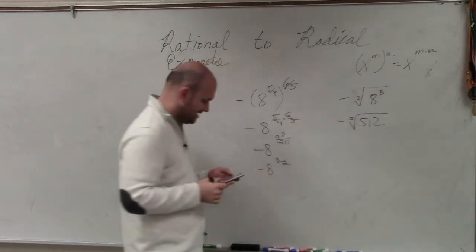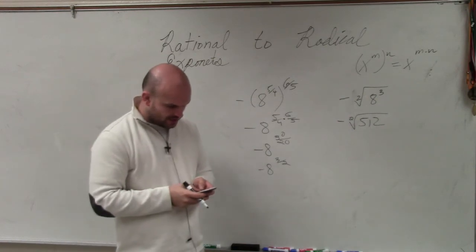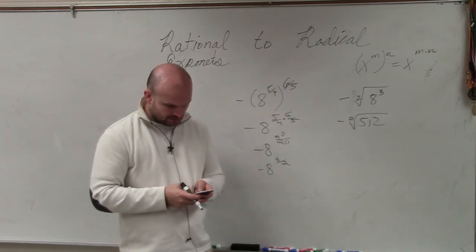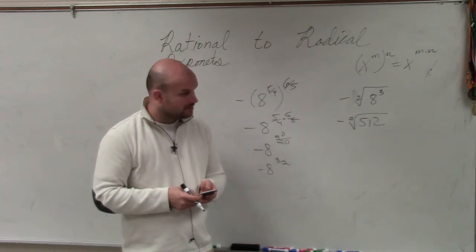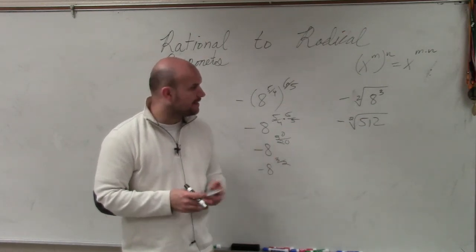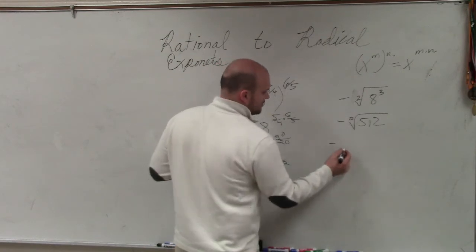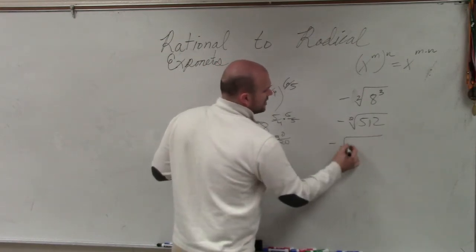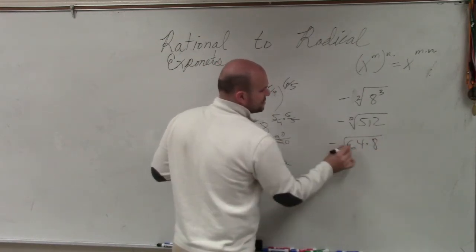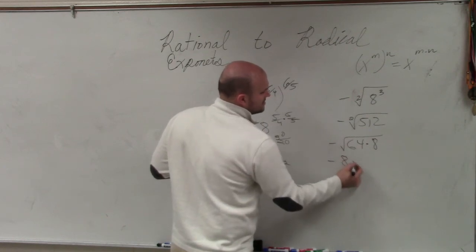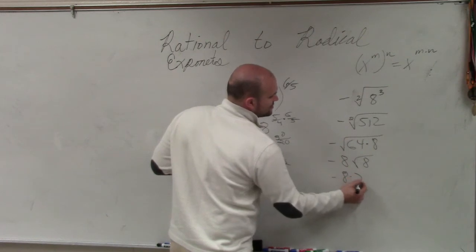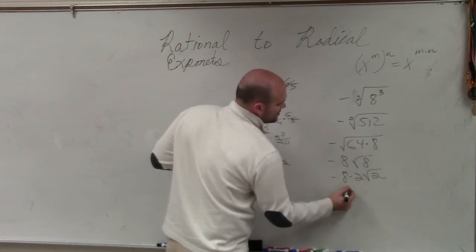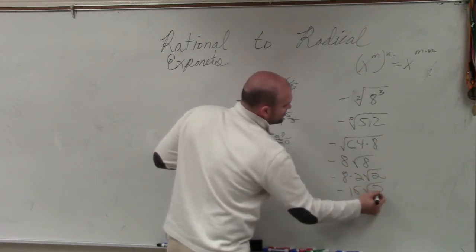And then we could actually break this up into negative square root of 64 times 8. Square root of 64 is 8 times the square root of 8, which can be broken down into negative 8 times 2, square root of 2. So your final answer is negative 16 times square root of 2. That would actually be your full simplified answer.